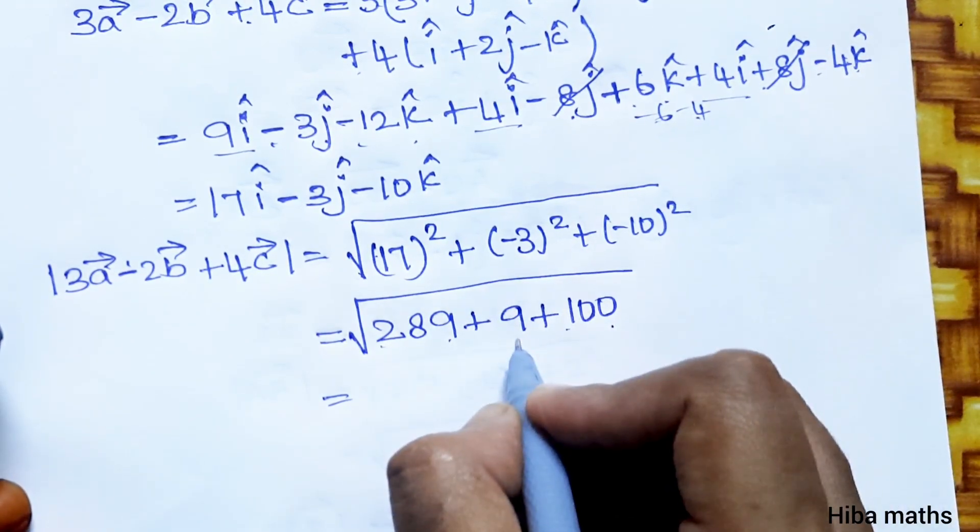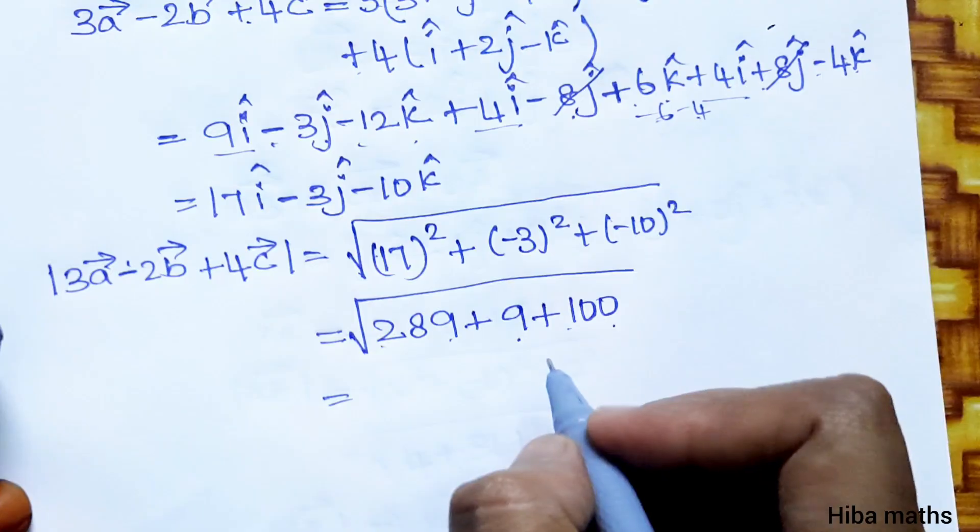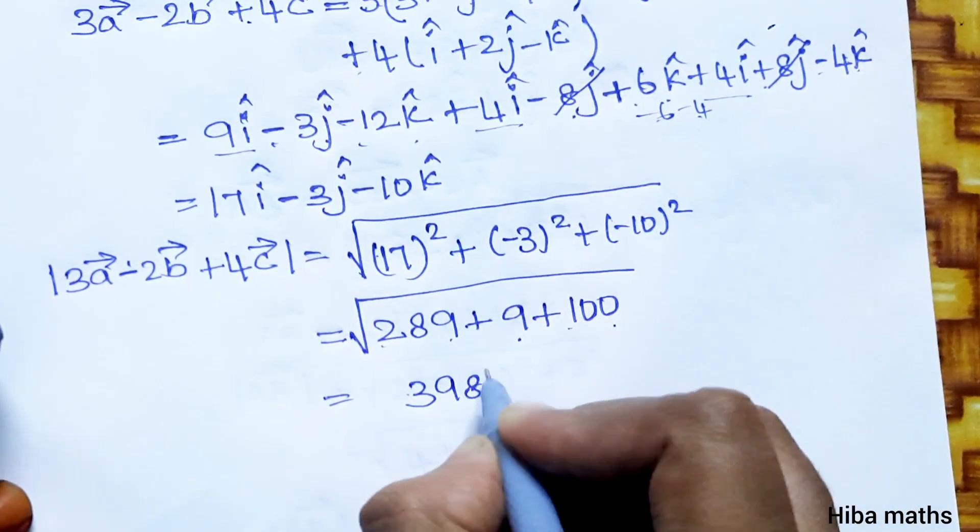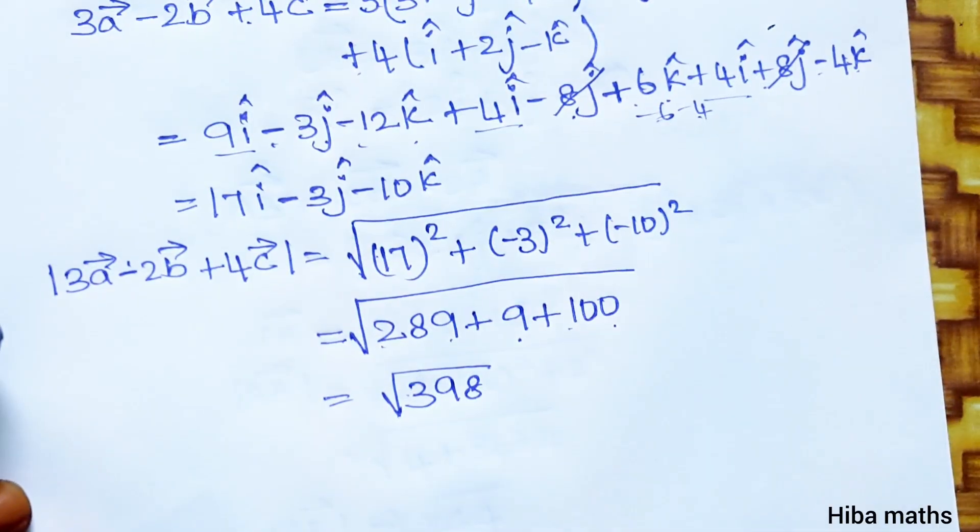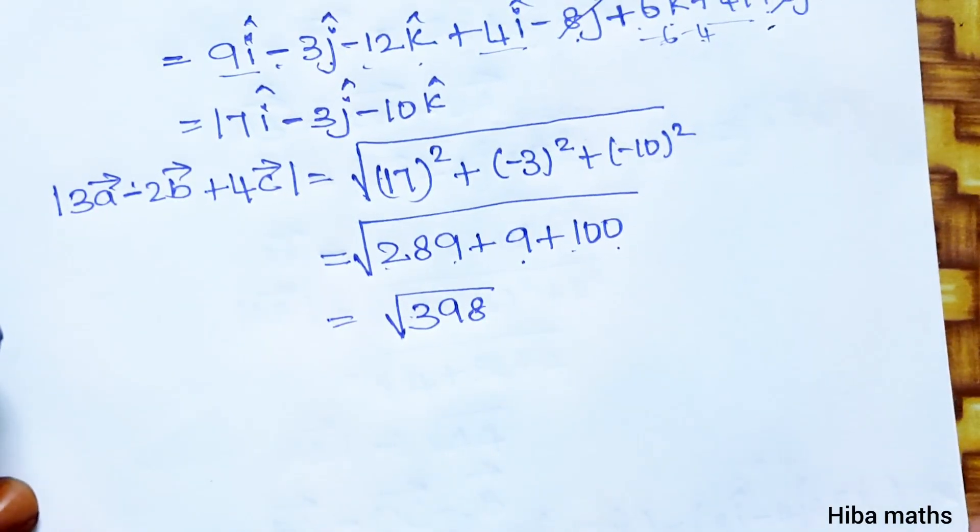Now we add: 289 plus 100 is 389, plus 9 is 398. The square root of 398.